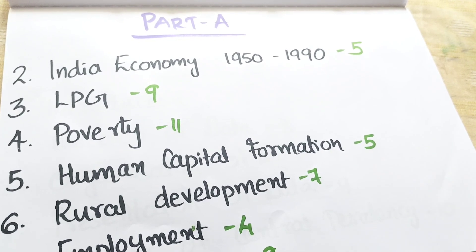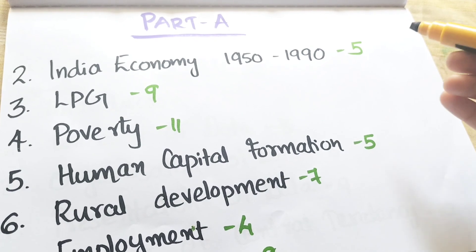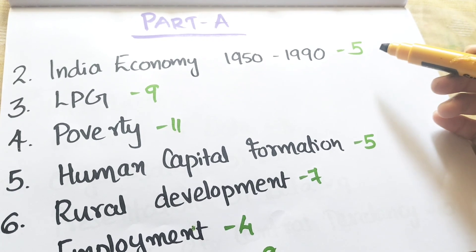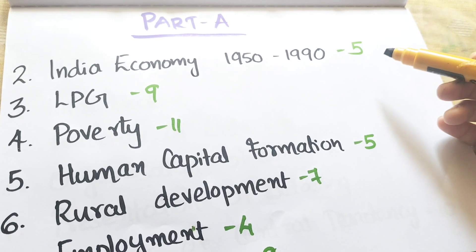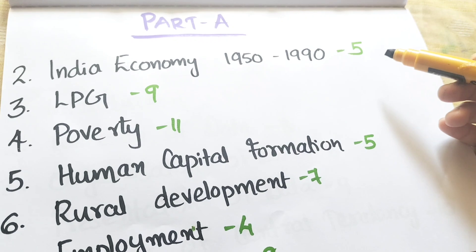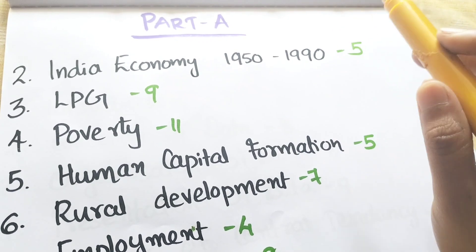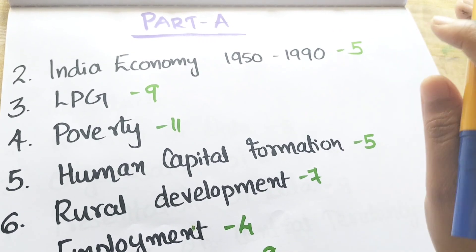In the second chapter, we will start reading Indian Economy on 1950 to 1990. It is very important to know about the year. Key 5-mark topics include Green Revolution, Self-Reliance, Modernization, Equity and Stability, and 5-Year Plans and Goals.